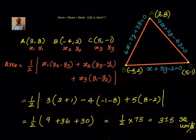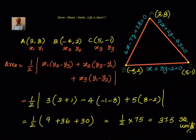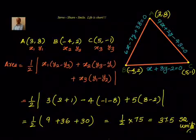Once we get the A, B, C coordinates, we apply the area formula — half into sigma x1 into y2 minus y3 — substituting x1, y1, x2, y2, x3, y3. With just a little bit of simplification we get the area as 37.5 square units. This is one example of how to find the area of a triangle, combining linear equations in two variables and coordinate geometry.